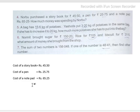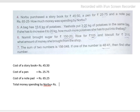So total money spent by Narbu is equal to the sum of all expenses. Adding the decimal parts: 0 plus 5 plus 5 is 10, write 0 carry 1.